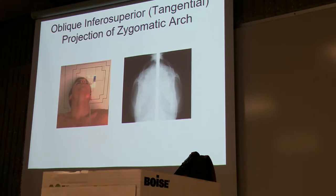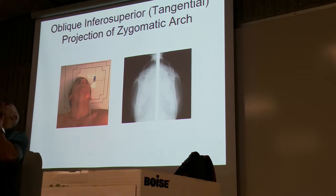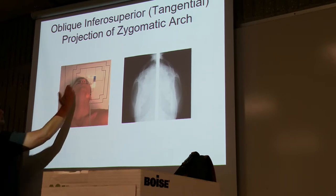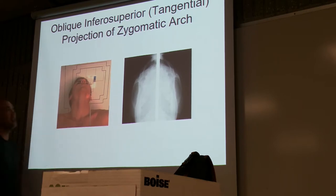Some of these terms that we use don't apply to all body parts — they only apply to certain body parts, which I will reinforce as we go through the program. Why is it oblique? Because his head is not straight up — it's actually turned a little bit. See how his nose is turned to the side?